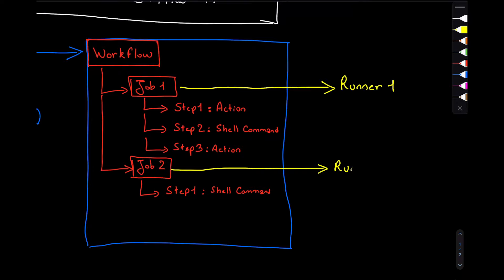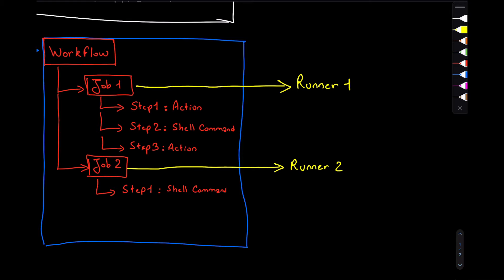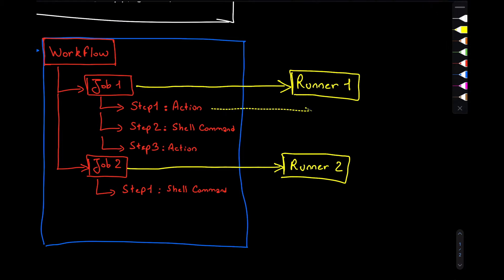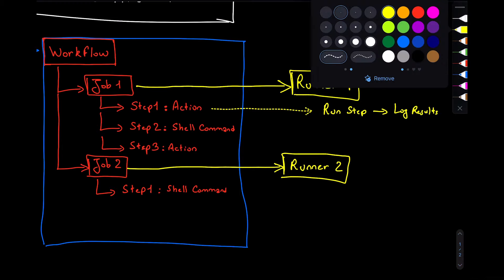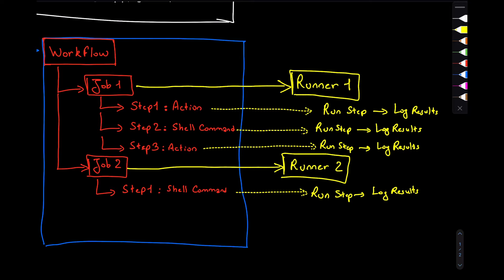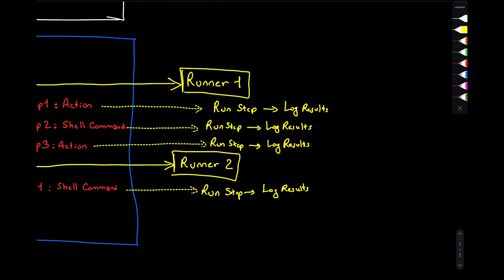Each job is associated with a runner. We will have two runners that can run independently. The runner is basically a machine, or a compute engine — it could be a laptop, or any device that can be connected to GitHub. The runner will establish a long-poll session with GitHub and wait for work. Once a workflow run starts, the steps are dispatched to the runner for execution. The runner will execute the steps in a sequence from top to bottom — step one, then step two, then step three. It's very important to understand that steps cannot run in parallel; they have to run in sequence from top to bottom.